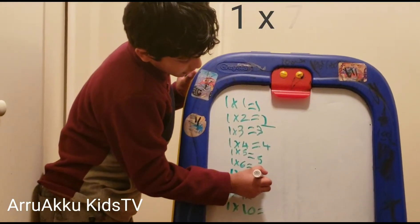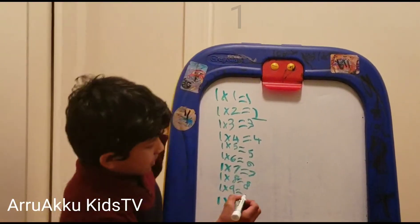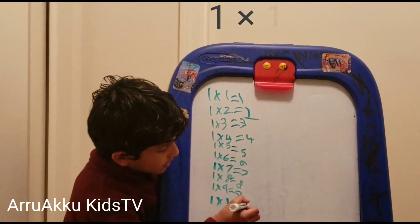1 times 7 is 7. 1 times 8 is 8. 1 times 9 is 9. 1 times 10 is 10.